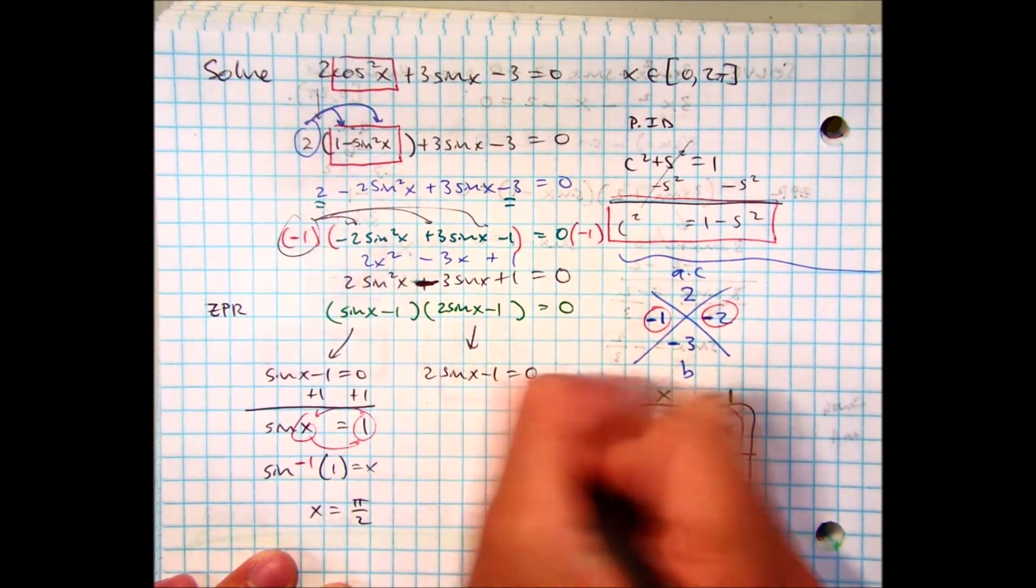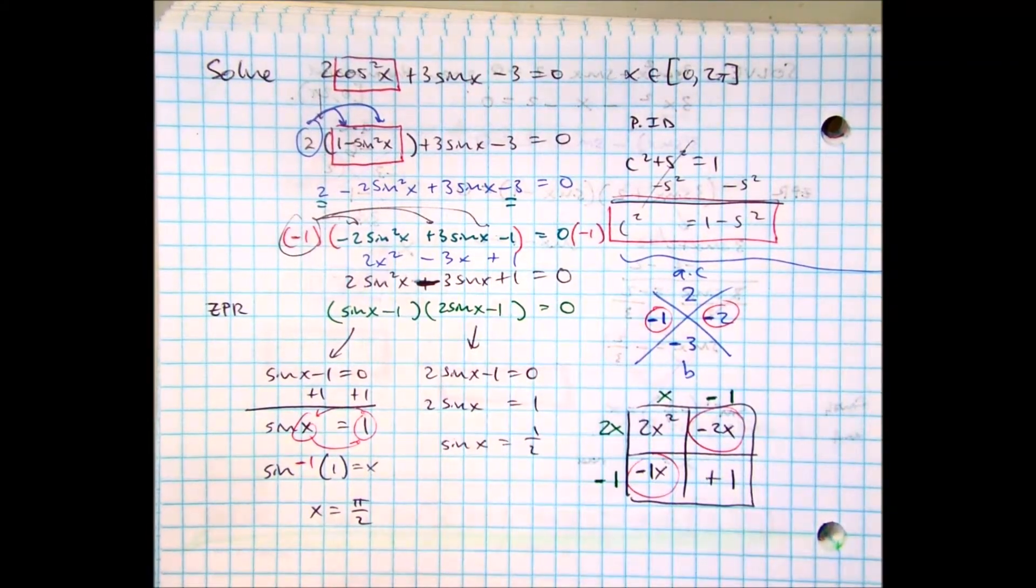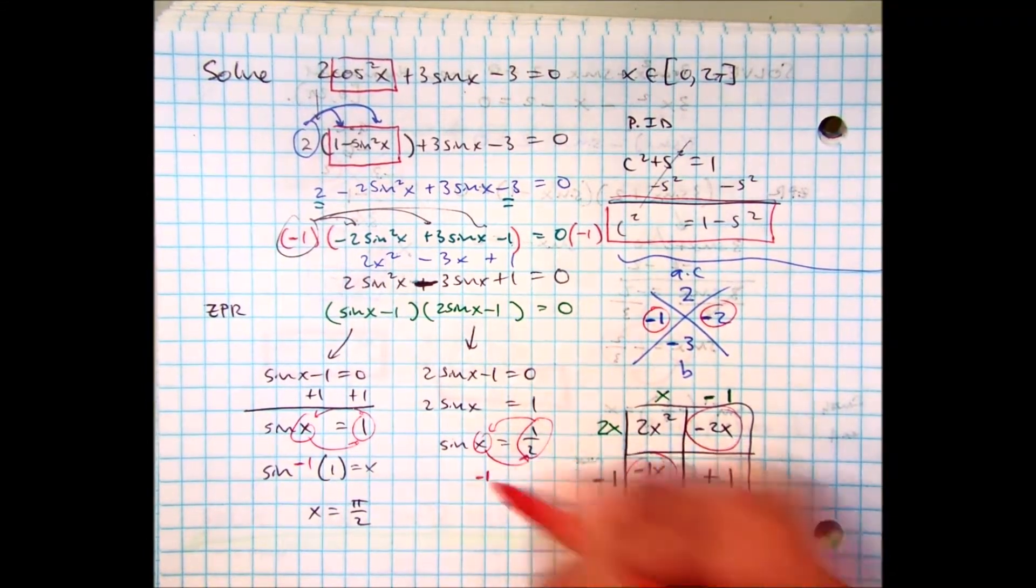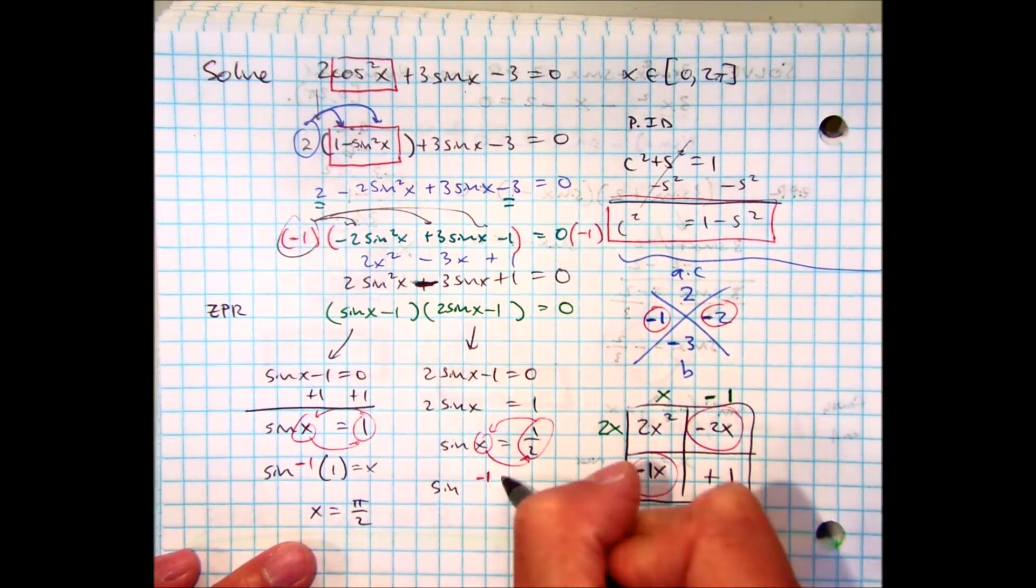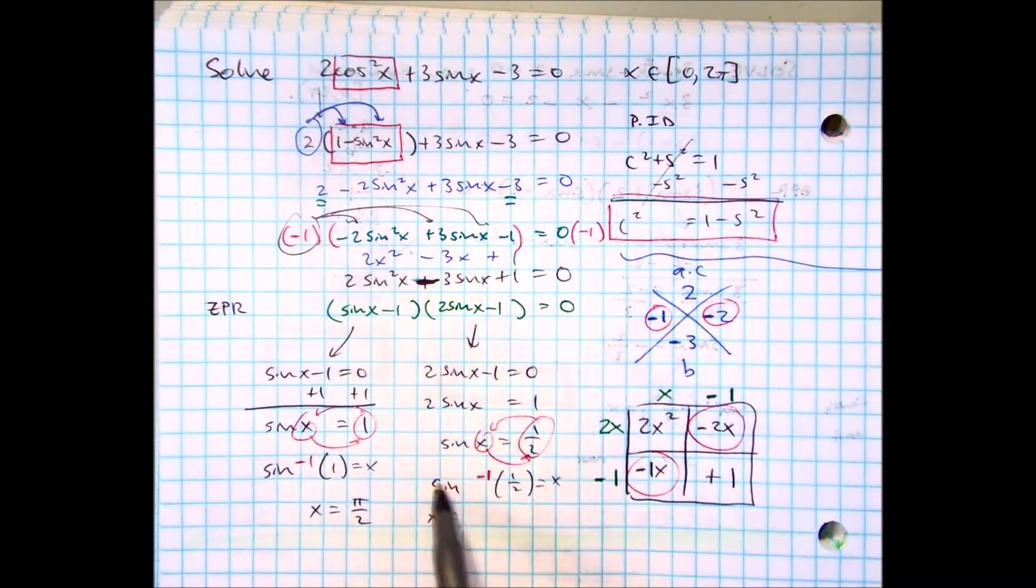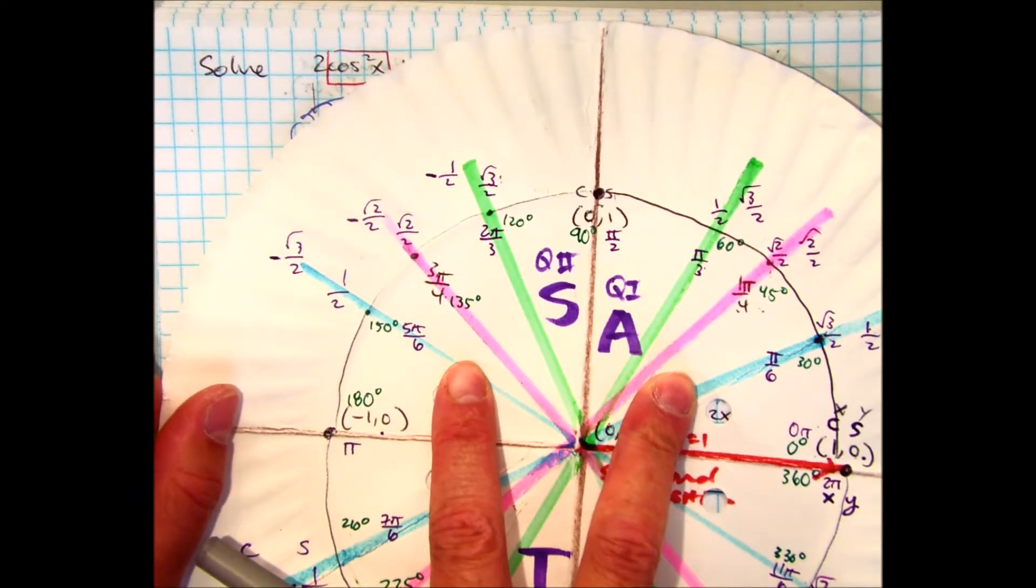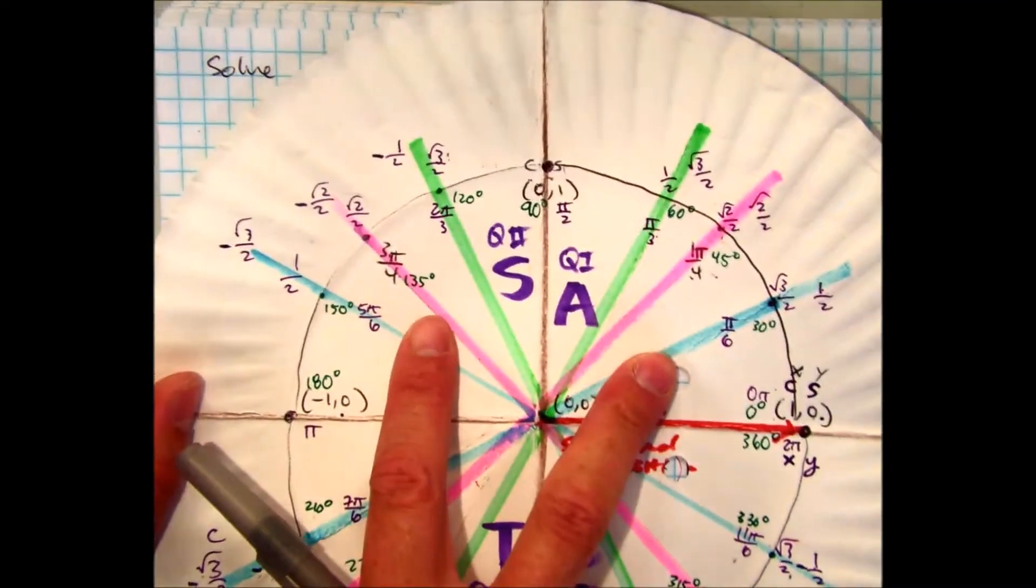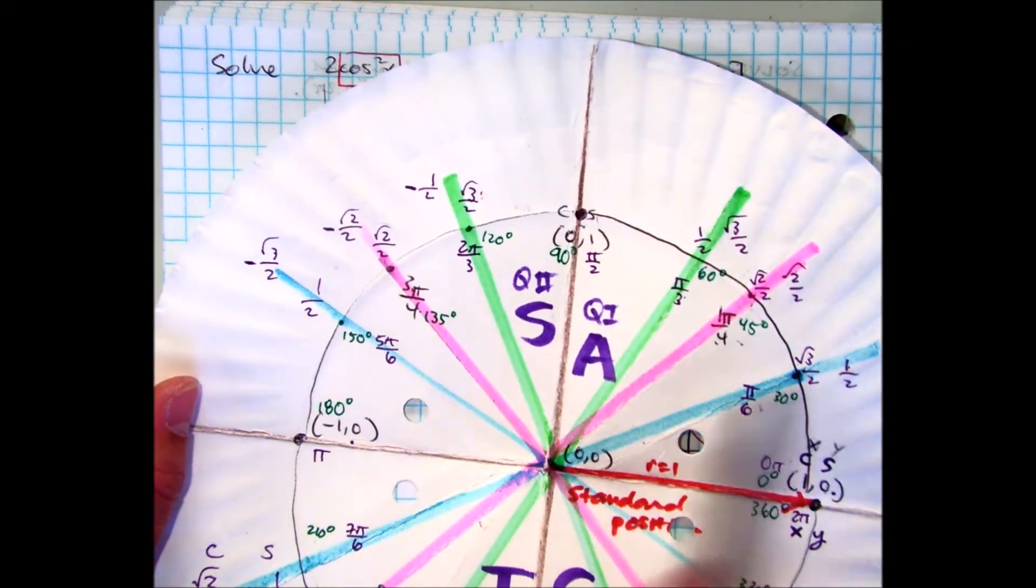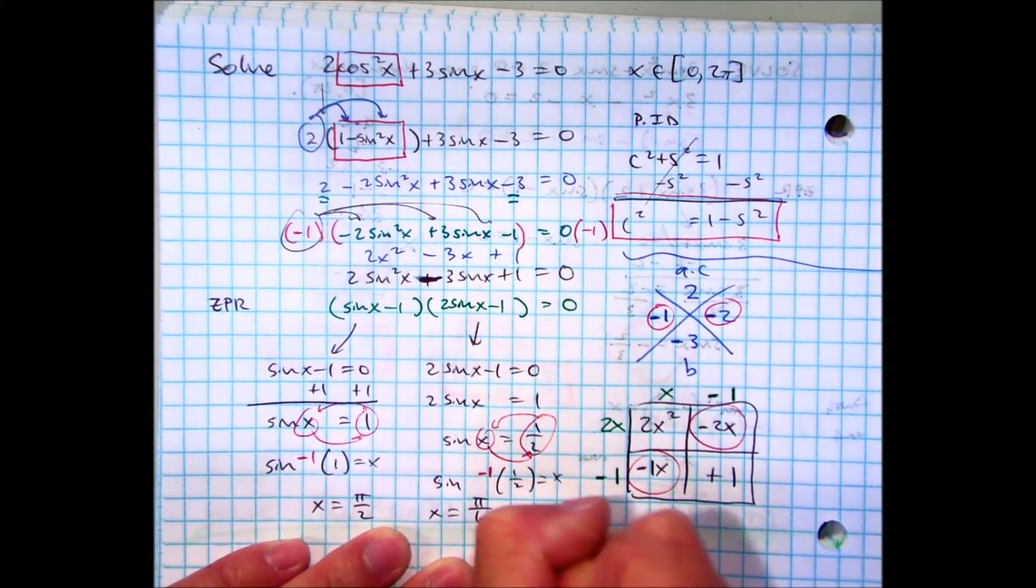We'll just go ahead and quickly solve this one. Add 1 to both sides. Divide by 2. Take the inverse. Inverse of sine of 1 half equals x. I'm looking for where sine is positive. These two quadrants. I'm looking for 1 half. Pi over 6 and 5 pi over 6, which is its reference angle in quadrant 2. So, pi over 6 and 5 pi over 6.